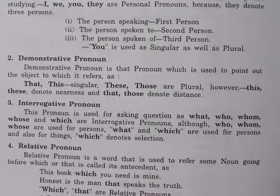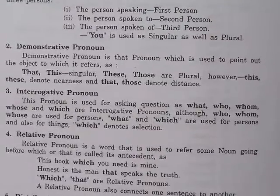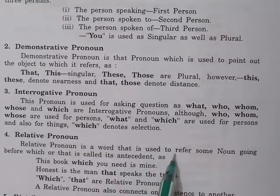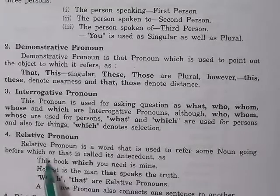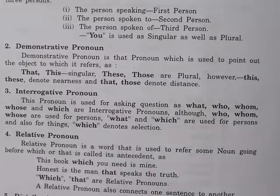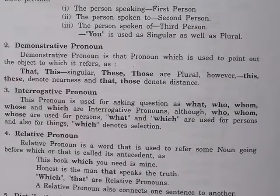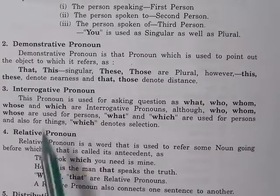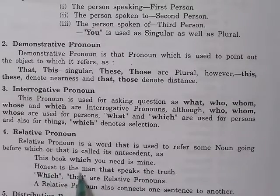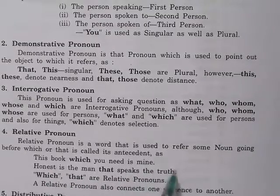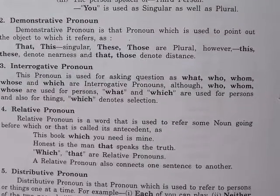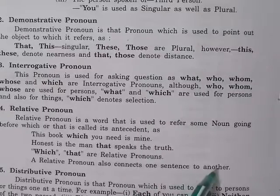The fourth one is relative pronoun. Relative pronoun is a word used to refer to some noun going before it, which is called its antecedent. For example: 'This book which you need is mine.' 'Honest is the man that speaks the truth.' Which and that are relative pronouns. A relative pronoun also connects one sentence to another.